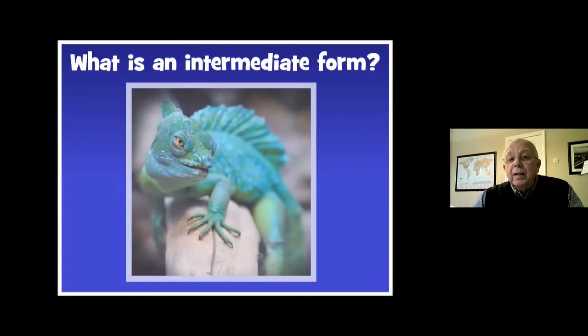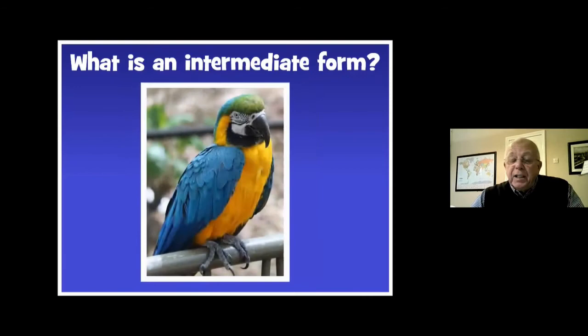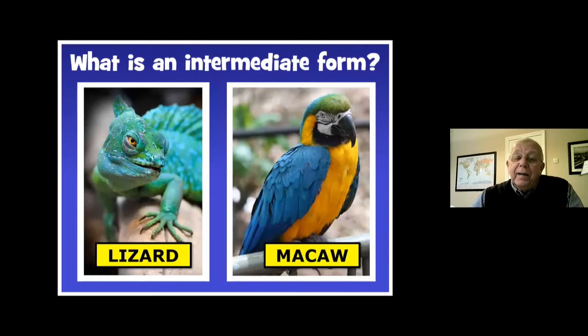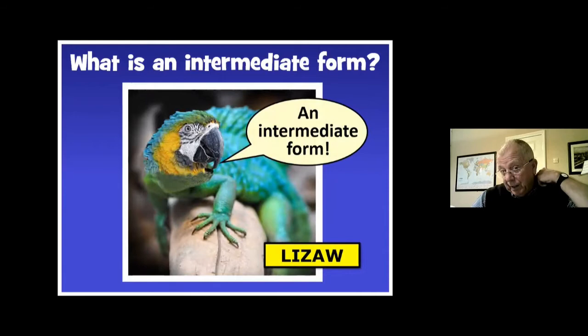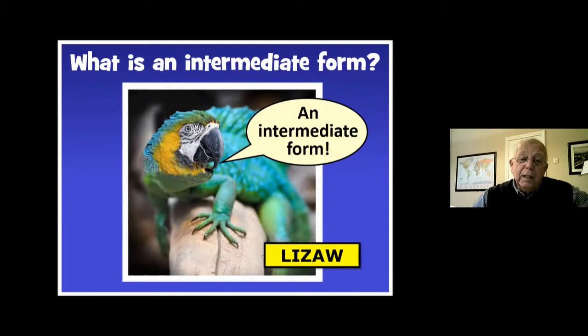What exactly is an intermediate form? Here we have the green lizard, and then we see the standard macaw. If the green lizard wanted to turn into the macaw it would have to pass through various stages. They tell us fish became amphibians, amphibians became reptiles, reptiles became birds and mammals, and then mammals evolved over alleged millions of years, bringing us to ape-man, cave-man, and finally modern man and woman — the intermediate form.